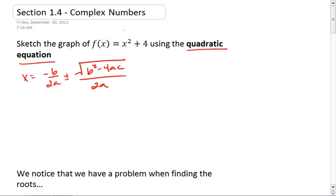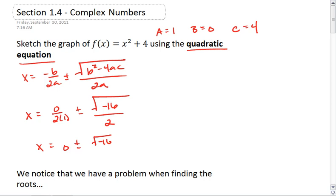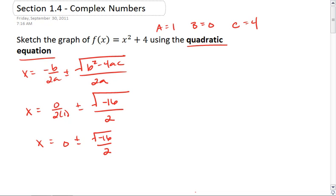Well, here we have a = 1. There's no middle term, so b = 0, and c = 4. Thus, we have x = 0/(2×1) ± √(0² - 4×1×4)/(2×1). 0² is just 0, so we get √(-4×1×4) = √(-16), all over 2×1, which is 2.